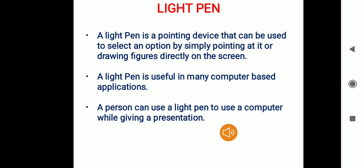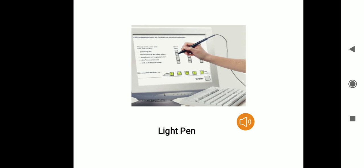The next input device is the light pen. A light pen is a pointing device that can be used to select an option by simply pointing at it or drawing figures directly on the screen. That means you can use a light pen to draw figures directly on the screen and also select options by pointing at them. A light pen is useful in many computer-based applications, such as when a person uses a computer while giving a presentation. The figure shows a user using a light pen to activate options on the computer screen.